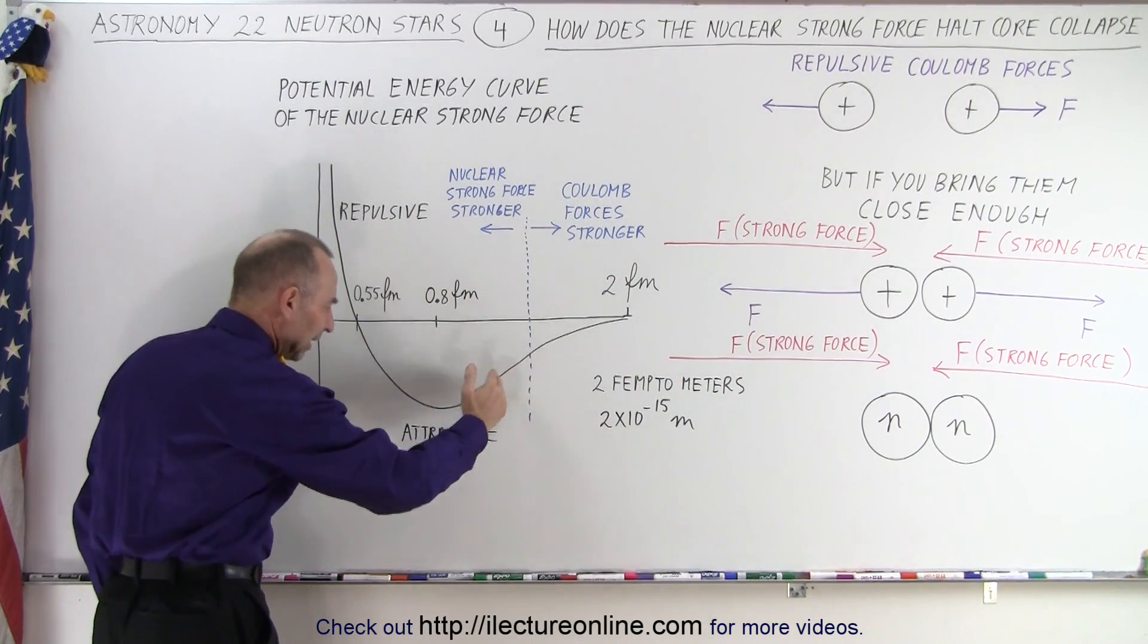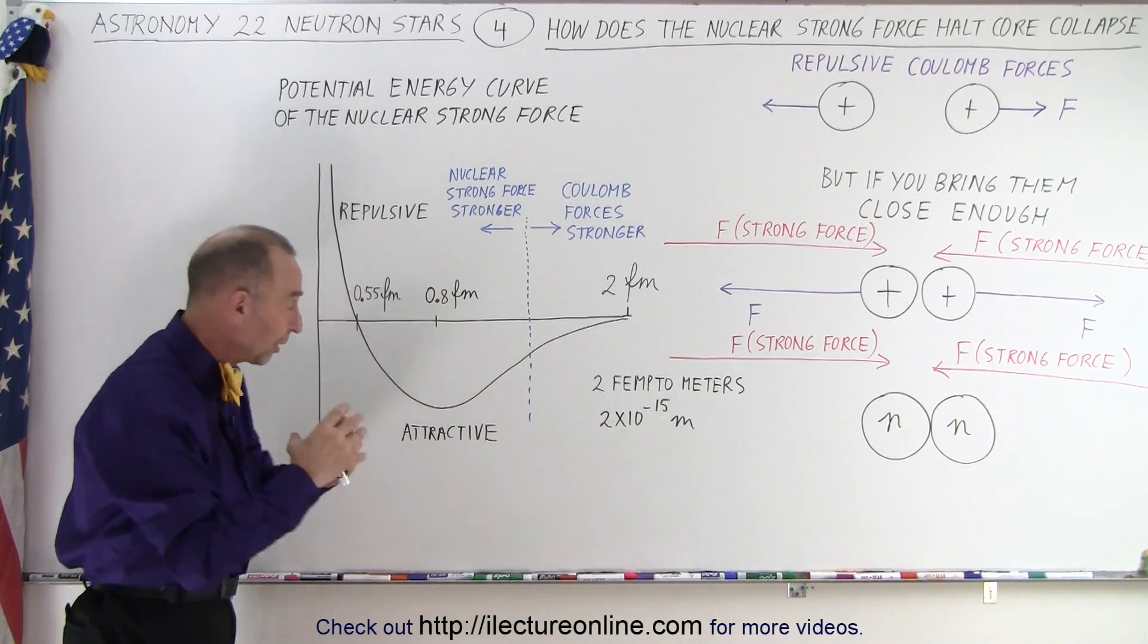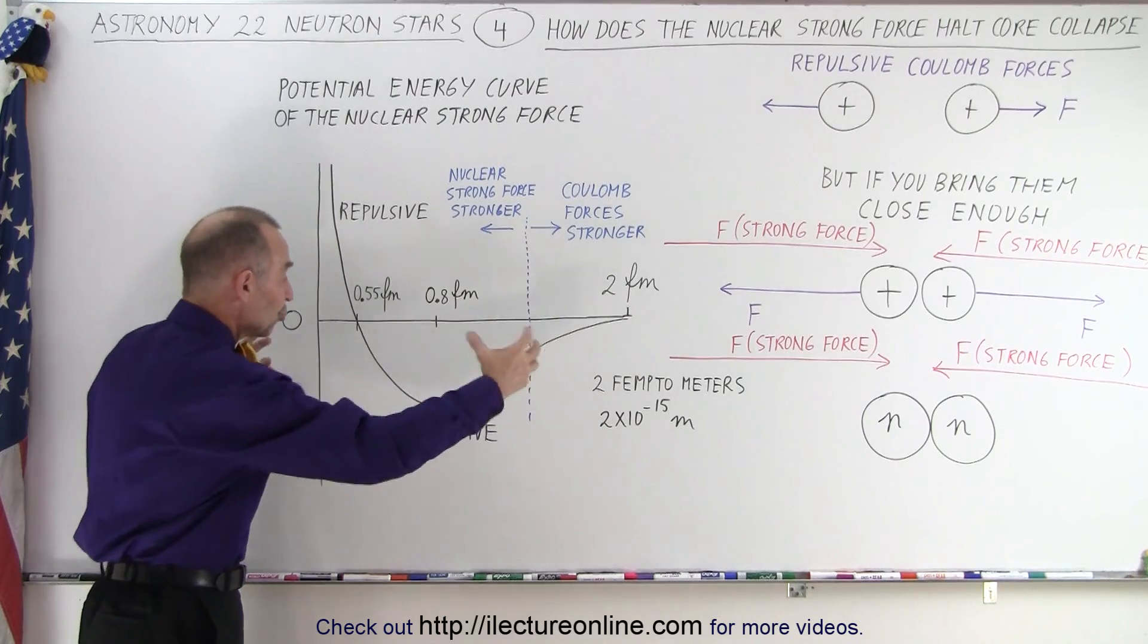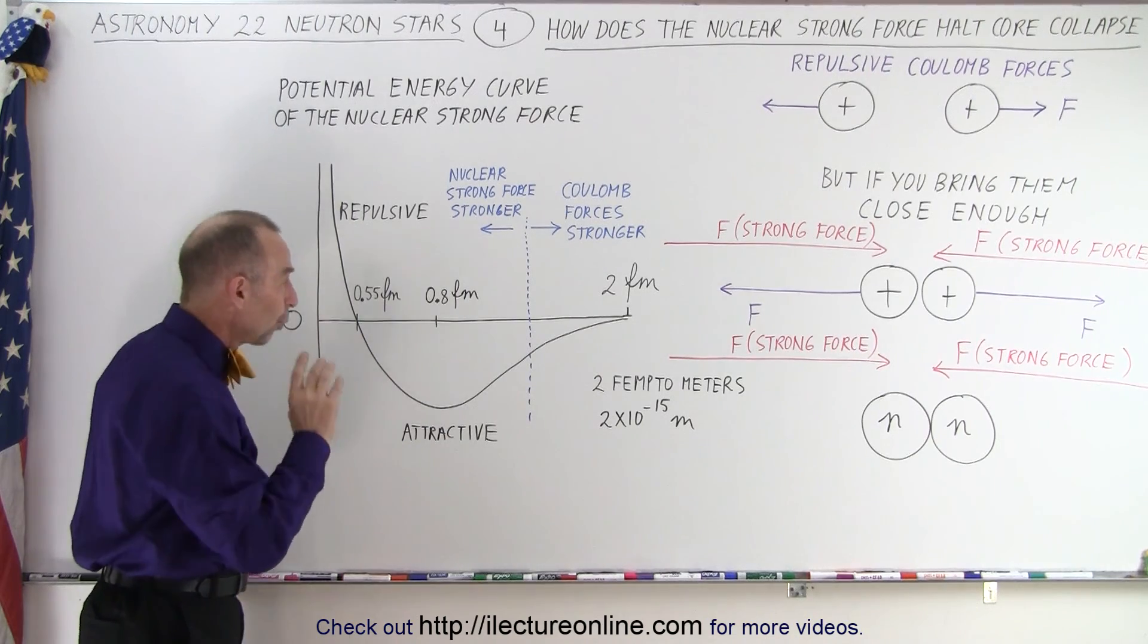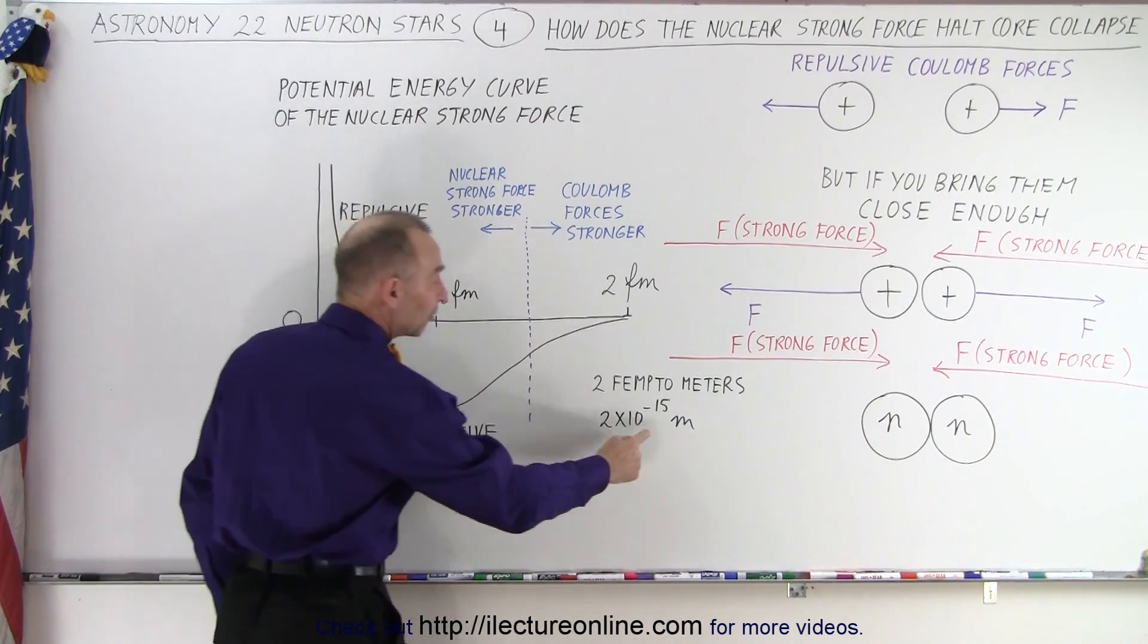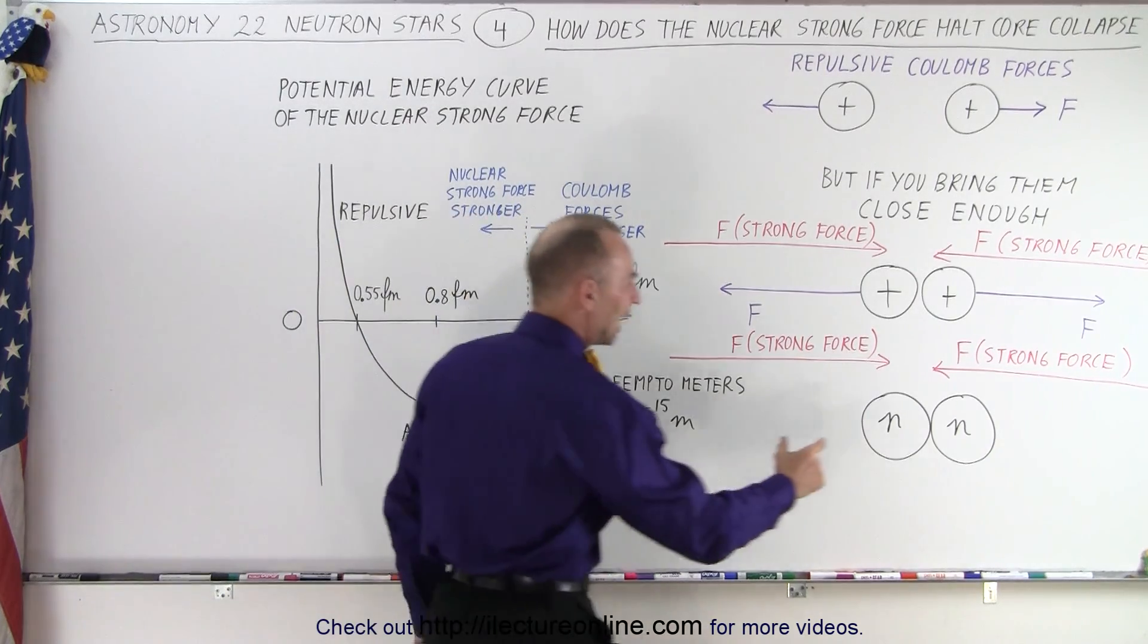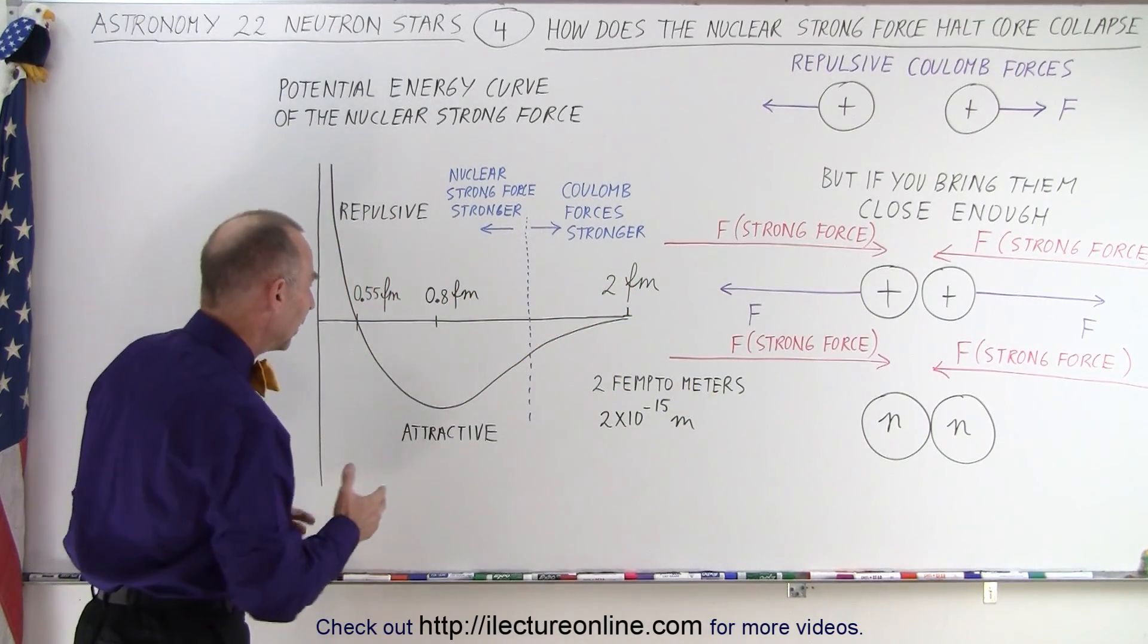So, what happens is, it gets to this point. Then, when you bring them even closer together, the nuclear strong force forces aren't quite as strong. They get weaker and weaker and weaker. And when we get to a certain point, they begin to repel. So, the nuclear strong force does both attract and repel as the objects get too close together. Where they are the strongest is at about 0.8 femtometer. Now, a femtometer is 10 to the minus 15 meter.